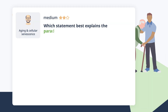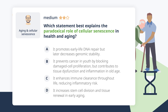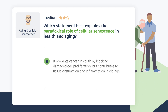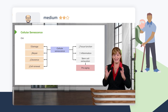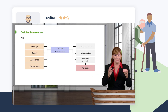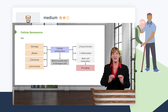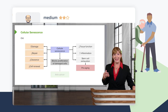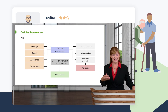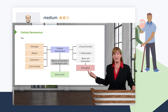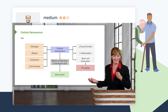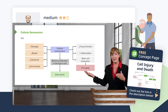Which statement best explains the paradoxical role of cellular senescence in health and aging? Cellular senescence is present in healthy cells to block proliferation of damaged cells, providing anti-aging and anti-cancer effects. But because we're accumulating damage over time, it leads to an increased rate of cellular senescence, which ultimately contributes to aging.